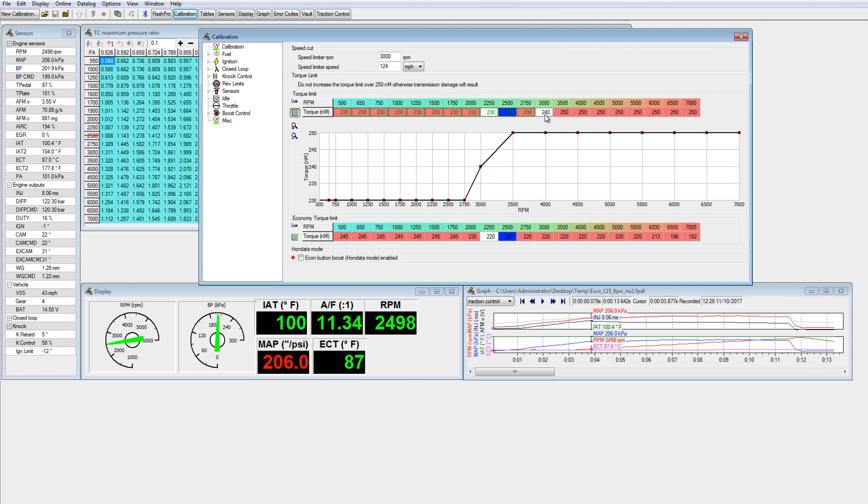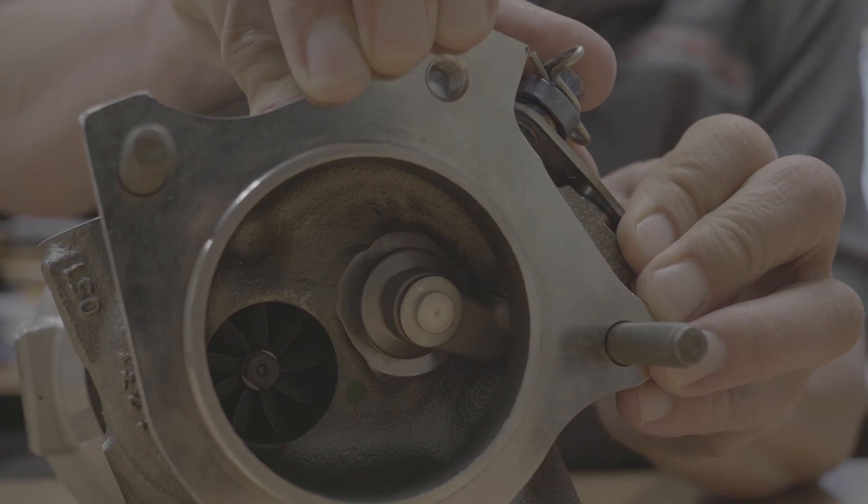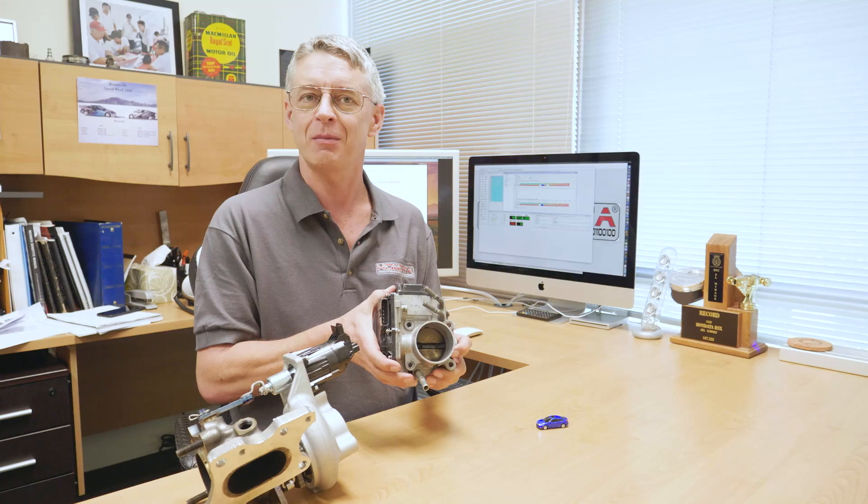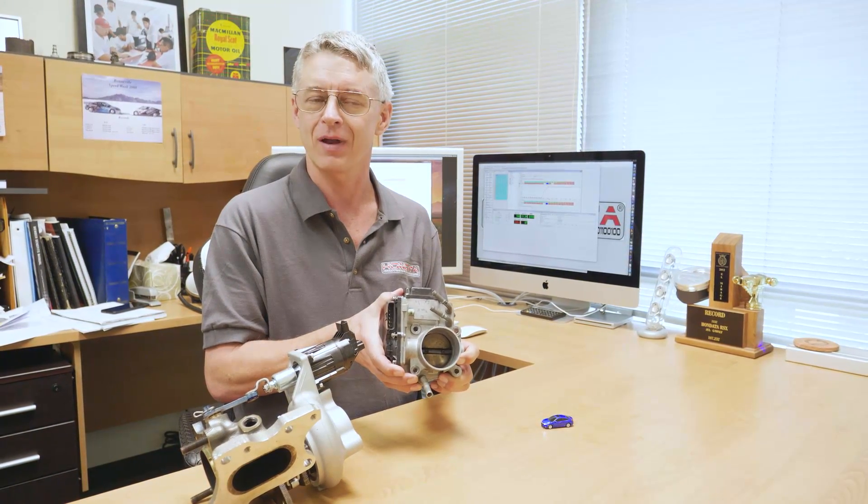The computer limits the torque in one of two ways. It limits the torque by altering the wastegate position on your turbocharger, by opening or closing the wastegate to get more or less boost. And the computer will also adjust the throttle plate position to adjust the amount of air that's going past the throttle plate.